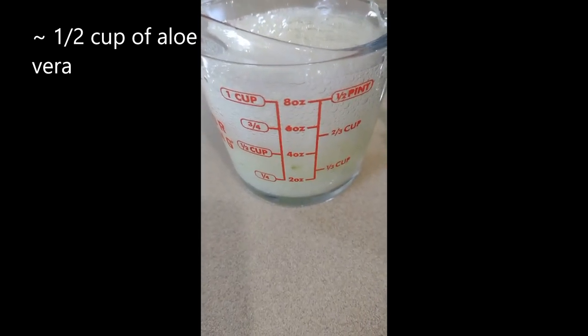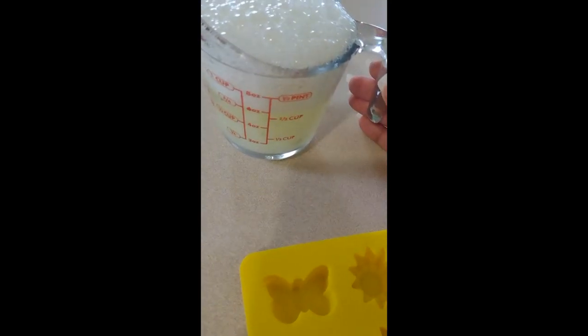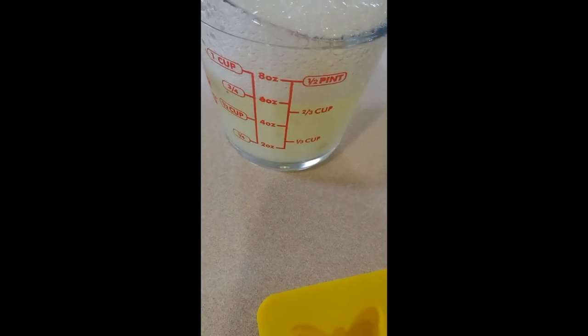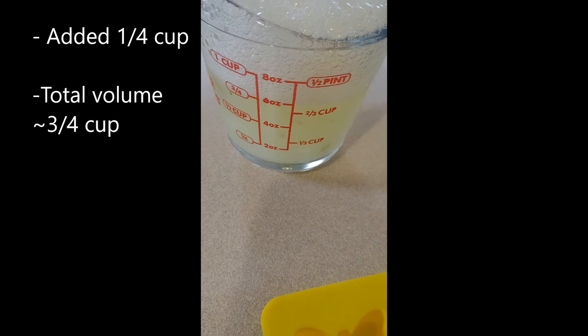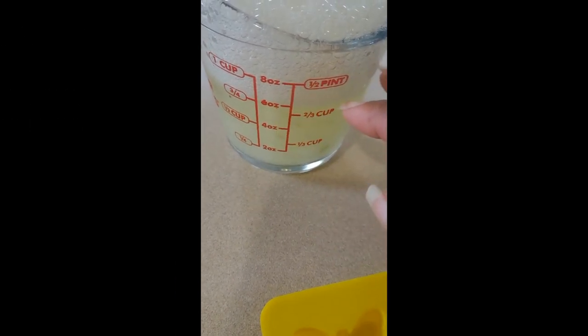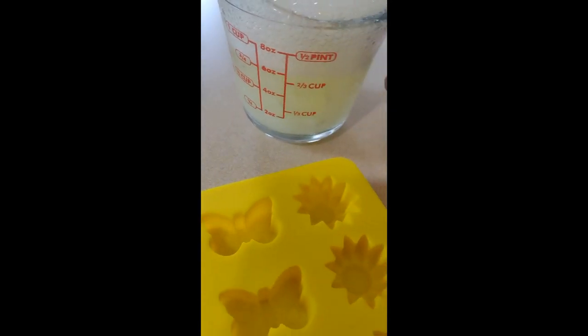What I'm going to do now is add a quarter cup of water to this. This will help me not only stretch out the amount of aloe vera I have, but I figured this will help with the freezing process. Now that I've added it, you can see that I have about three fourths of a cup of aloe vera.